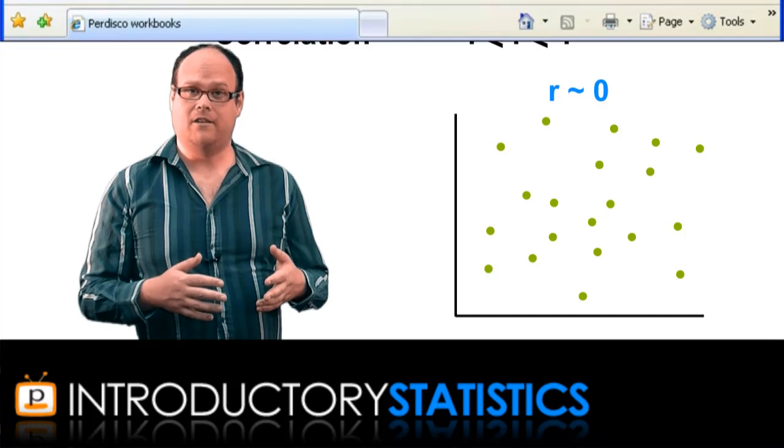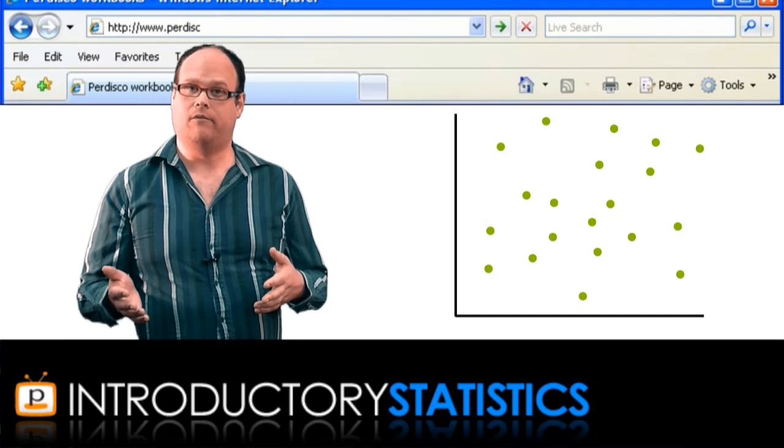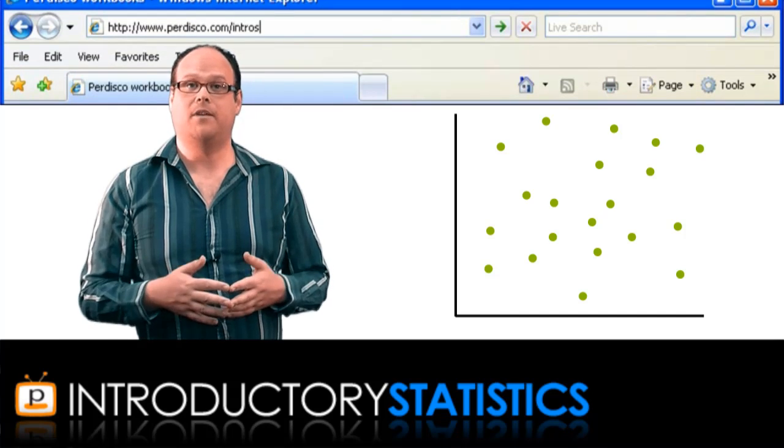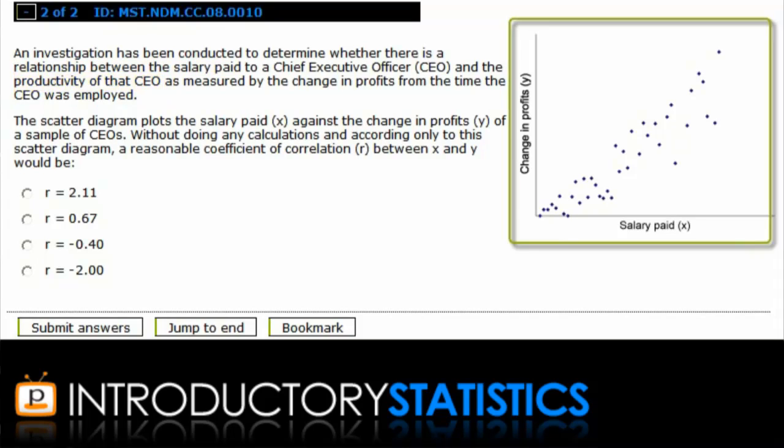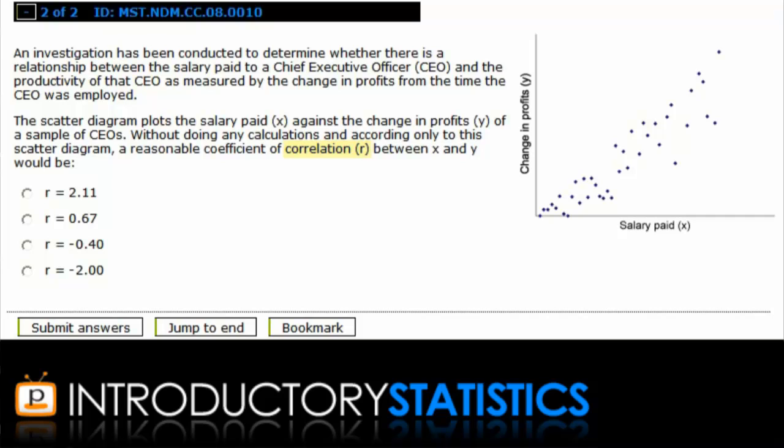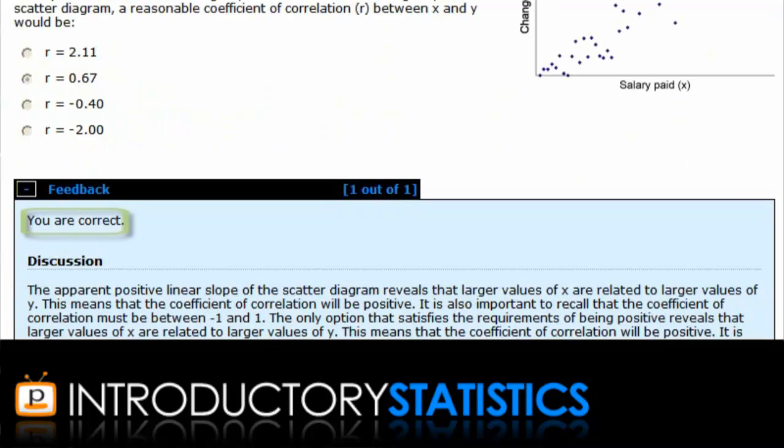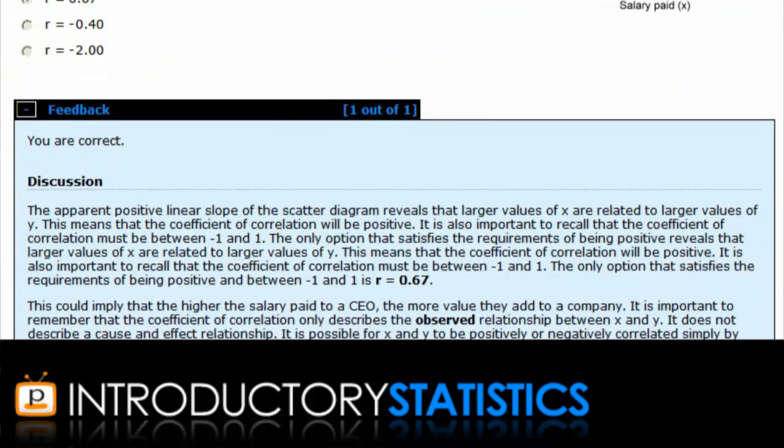Now, to get a feeling for the significance of the correlation as a measure of linear relationship, let's try a question from the Pedisco workbook. In this question, there is an investigation into any relationship between the salary paid to a CEO and the productivity of that CEO. A scatter plot of collected data is given, and based on this, you're being asked to nominate a suitable value for the correlation. Of the options given, the only possible correlation here is 0.67, so we'll submit that. And now we get personalized feedback and an explanation for the question.